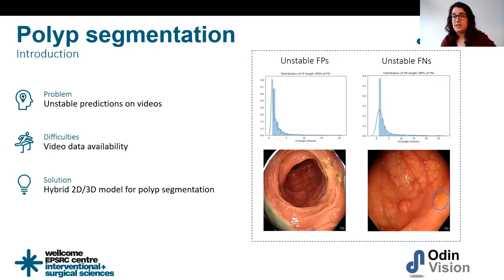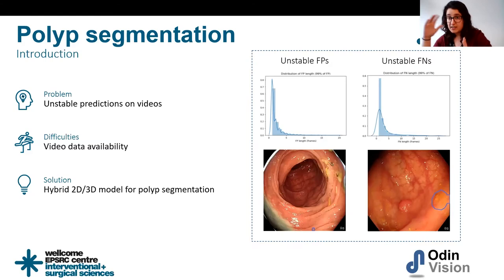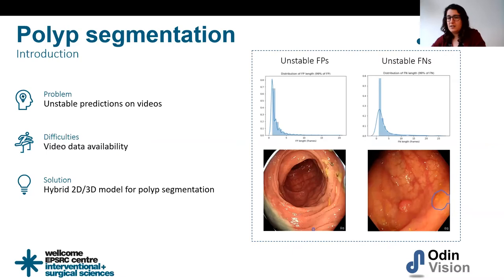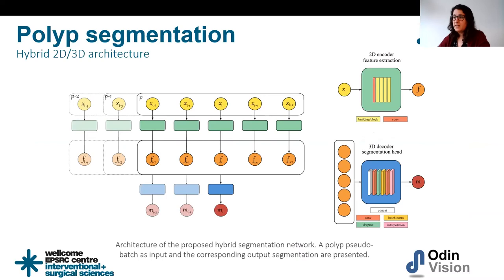The first solution that comes to mind is using a 3D network — adding a third temporal dimension of consecutive frames instead of just spatial 2D. The problem with 3D networks is that they're heavy, prone to overfitting, and need more data to train. But most datasets are just static images, not videos, so we have less data for 3D networks.